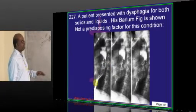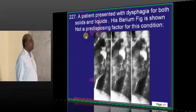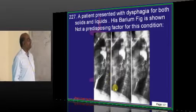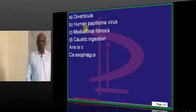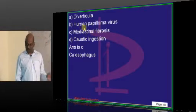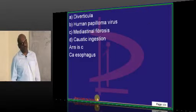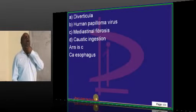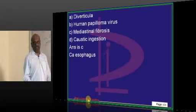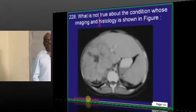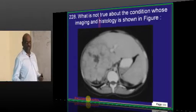Patient present with dysphagia for both the solids and liquids. That means it is an obstructive lesion. And his barium is showing the typical figure. What are the predisposing conditions? Caustic ingestion or a carcinoma esophagus due to papilloma virus or diverticula, any of them can be responsible for an obstructive type of dysphagia which is typically for both solids and liquids. Achalasia and other things won't be equal for both solids and liquids.